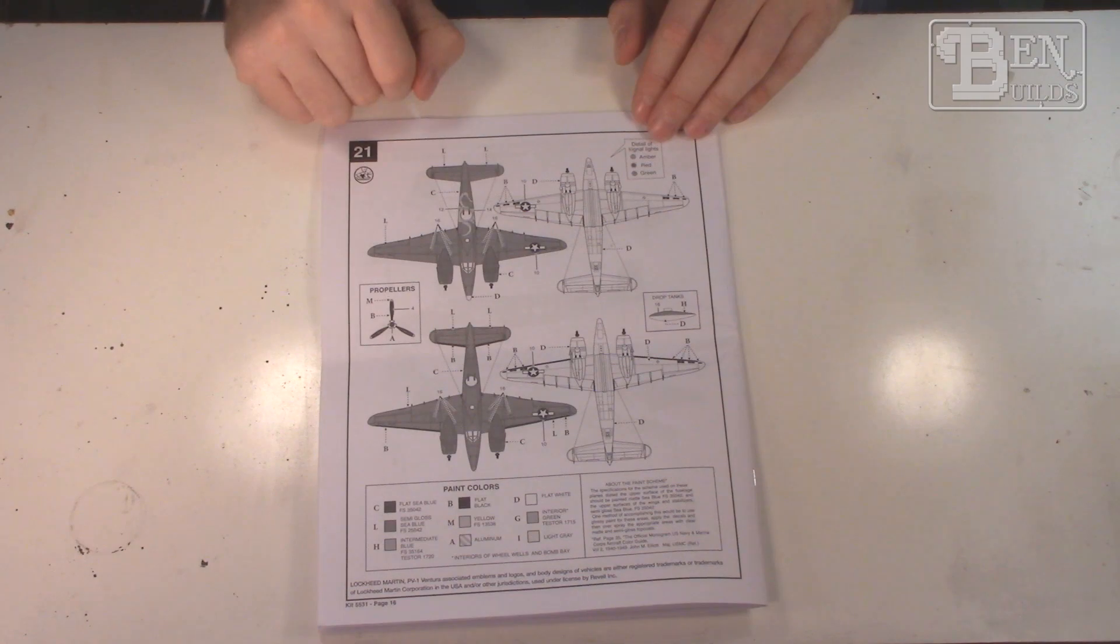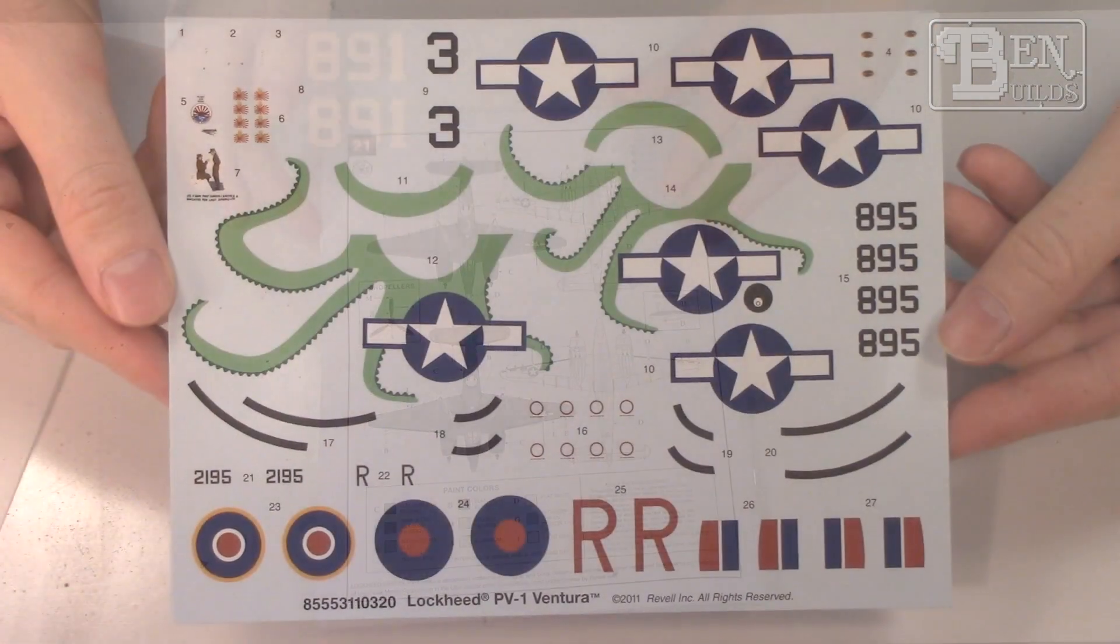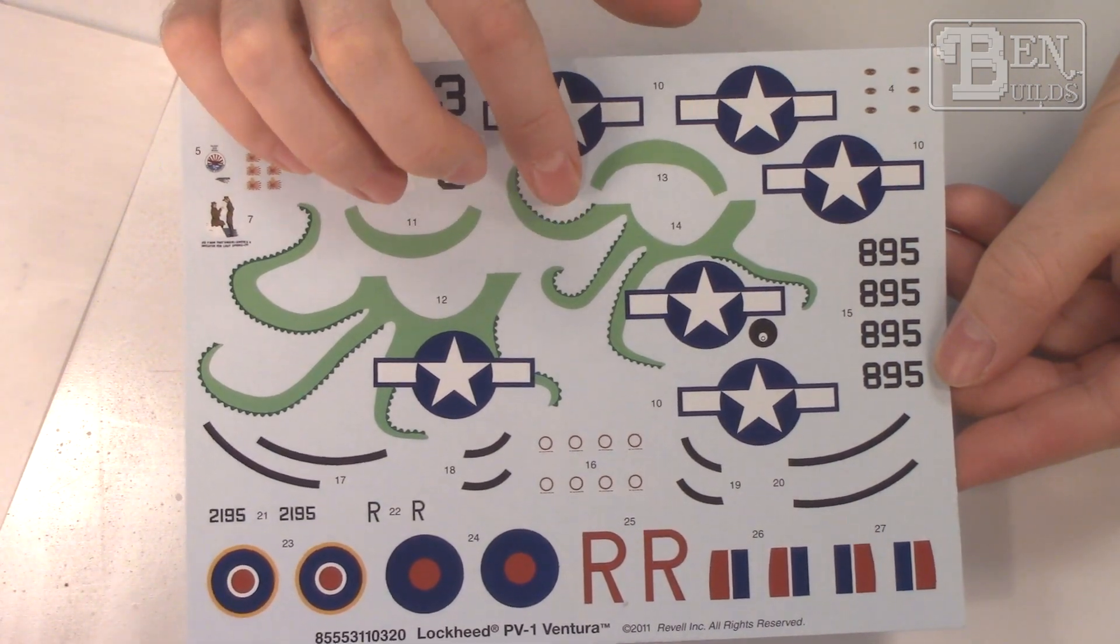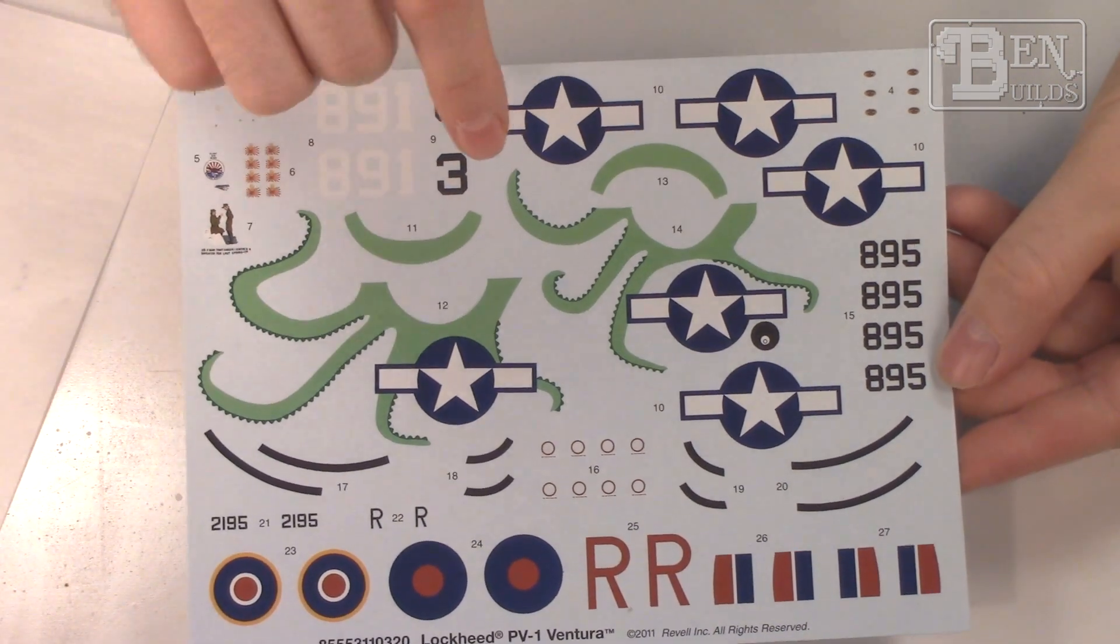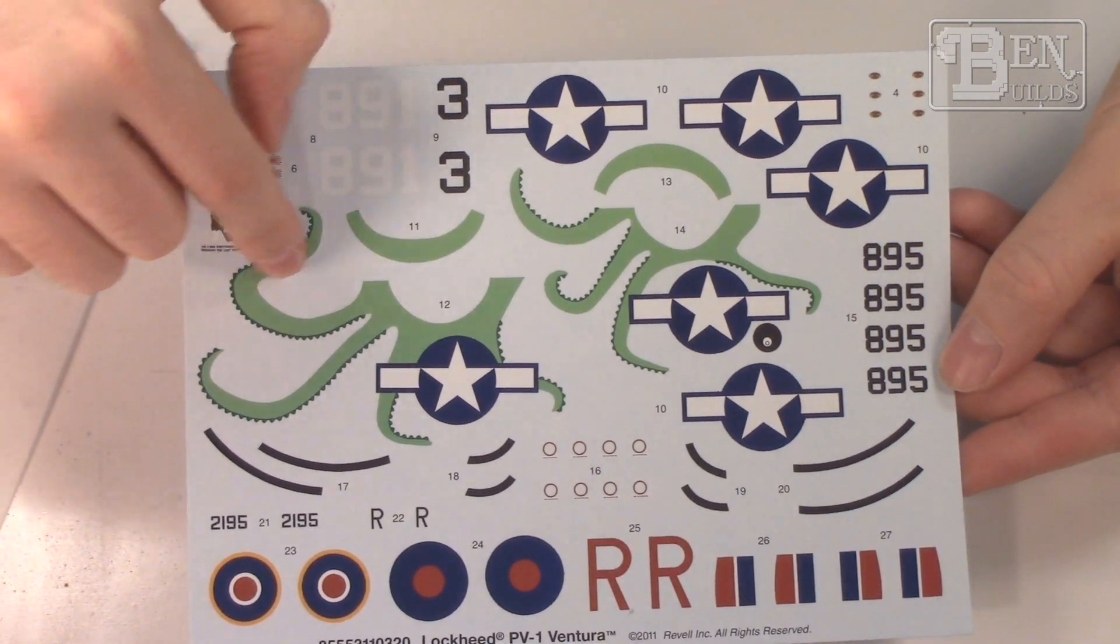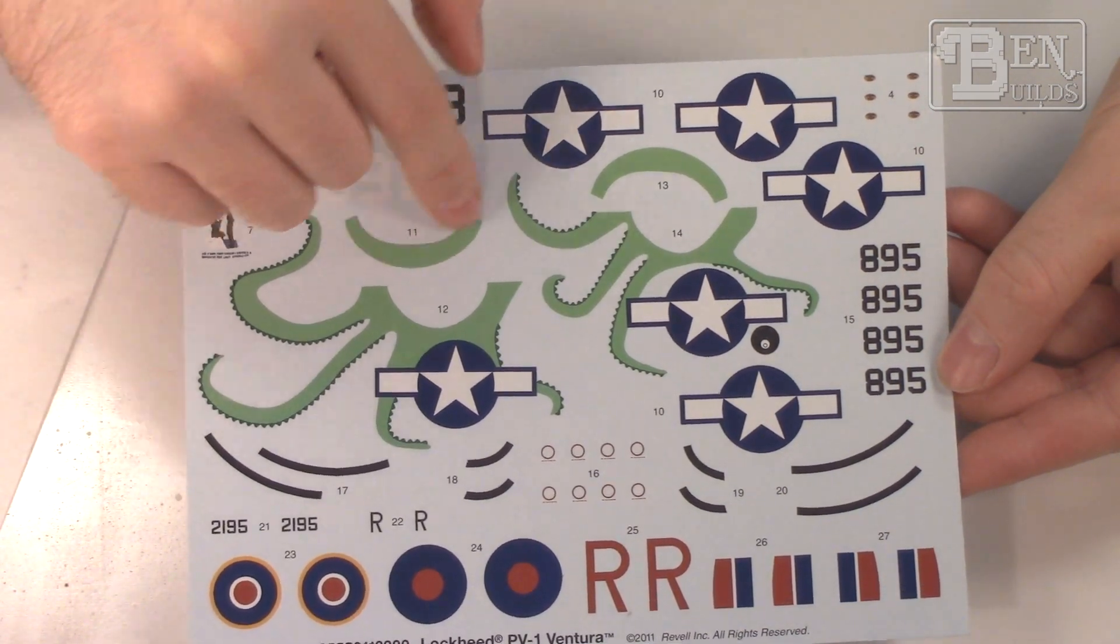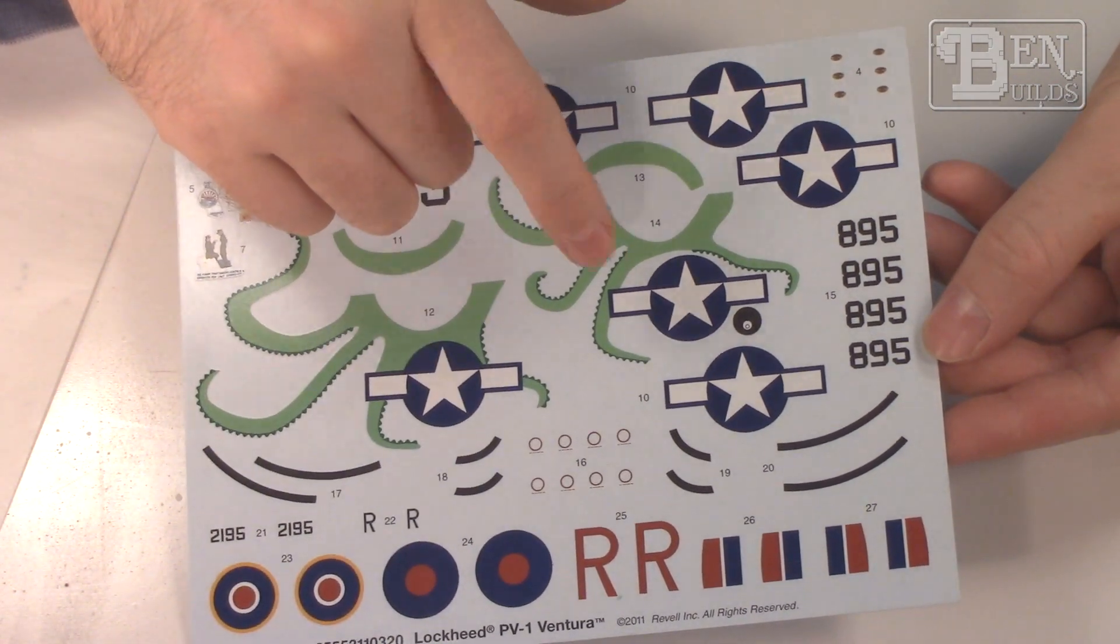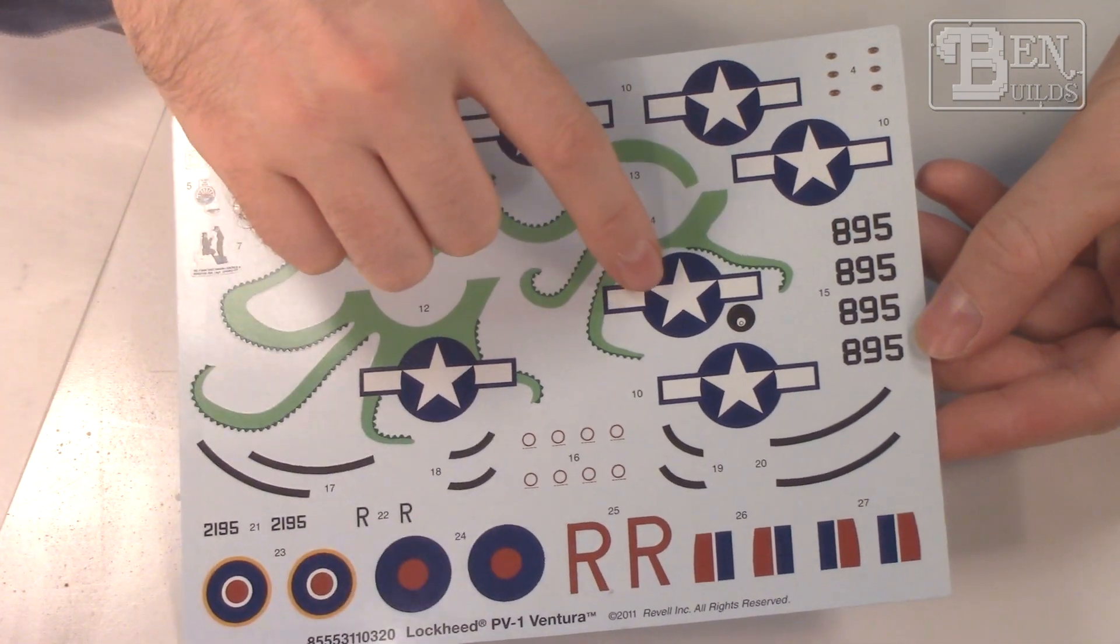Last page we have our stencils, nothing fancy there. I've got to check on some of these to make sure I'm using all the stencils I need to use. Now for the actual decals, let's take a closer look. You can see they're actually very nice decals. I don't know about this green on this octopus tentacle though. I don't know if this should be a lighter green. Most of the pictures I've seen of other people building this model have a different color green and that might be hard to match.